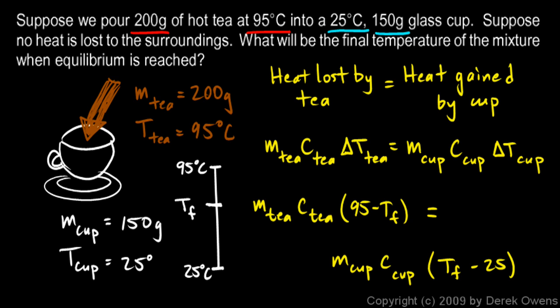Now notice that in one case I have a number minus TF right there, and in the other case I have TF minus a number right there. That's because I'm always doing the high minus the low. And you can see that 95 is above TF. So the amount of heat lost is going to depend on that temperature drop, 95 minus TF. And for the cup down here, the amount of heat gained depends on this temperature difference. The difference between TF and 25. That's TF minus 25.